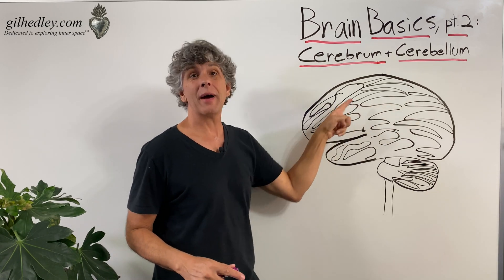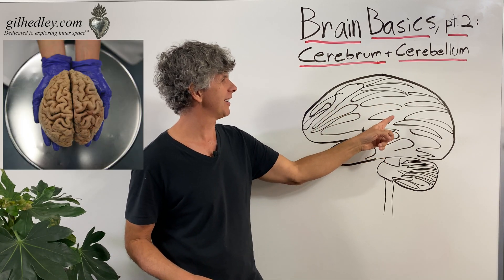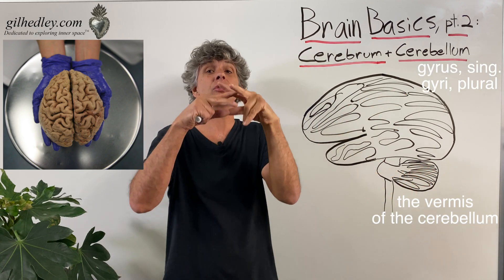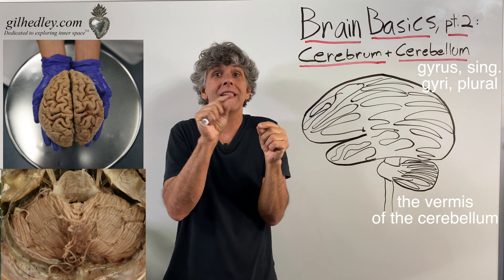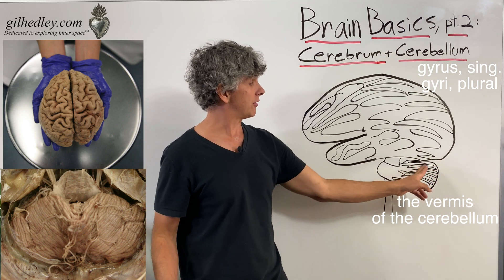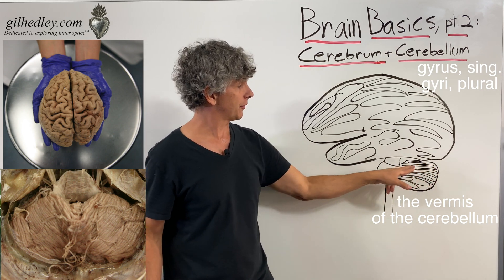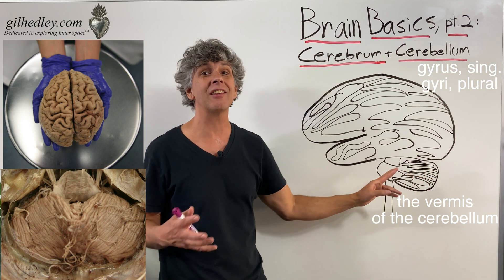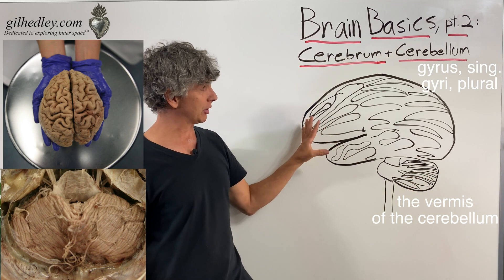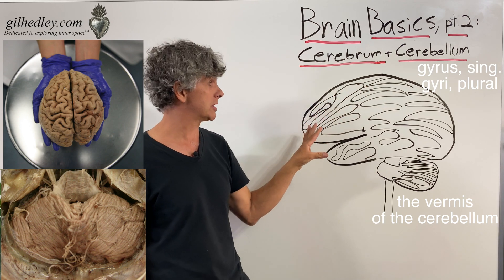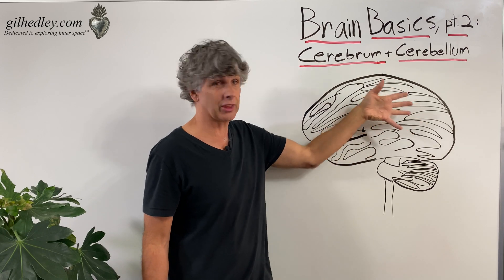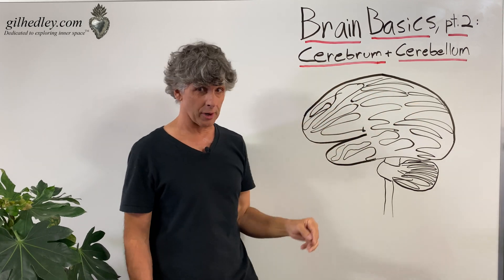Now, both of them have squiggles — the gyri. In the cerebellum, we call it the vermis because the squiggles are elongated into worm-like strips. The vermis of the cerebellum are the finer squiggles that create a convoluted and complex brain surface. Similarly, the surface of the cerebrum is more complex because of the gyri here, which are much larger, as is everything about the cerebrum.